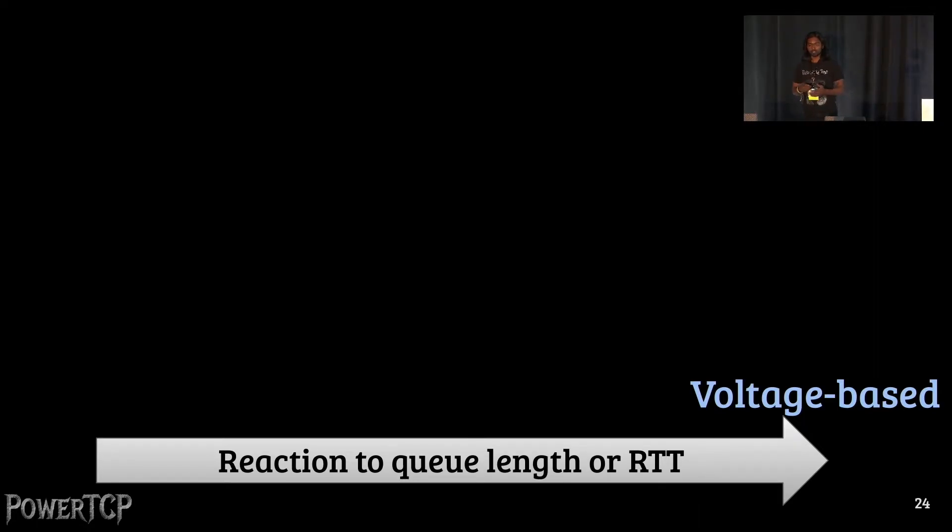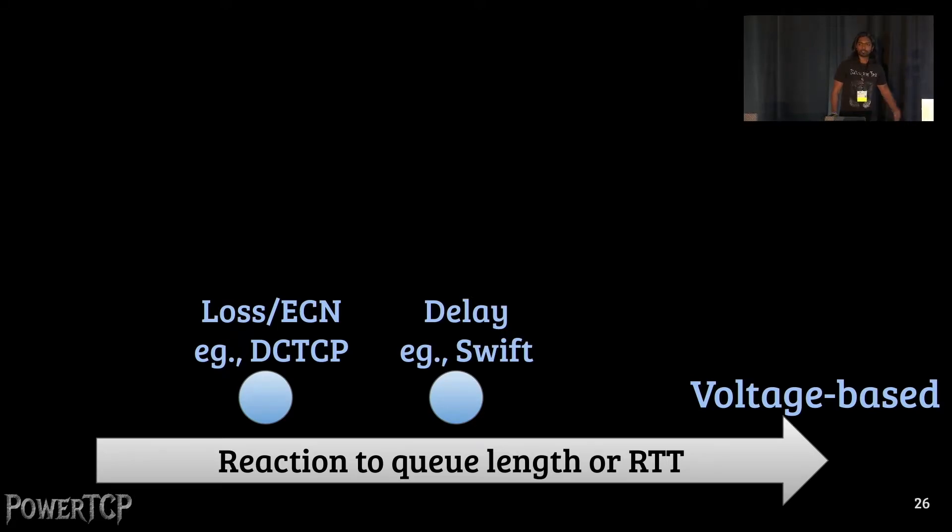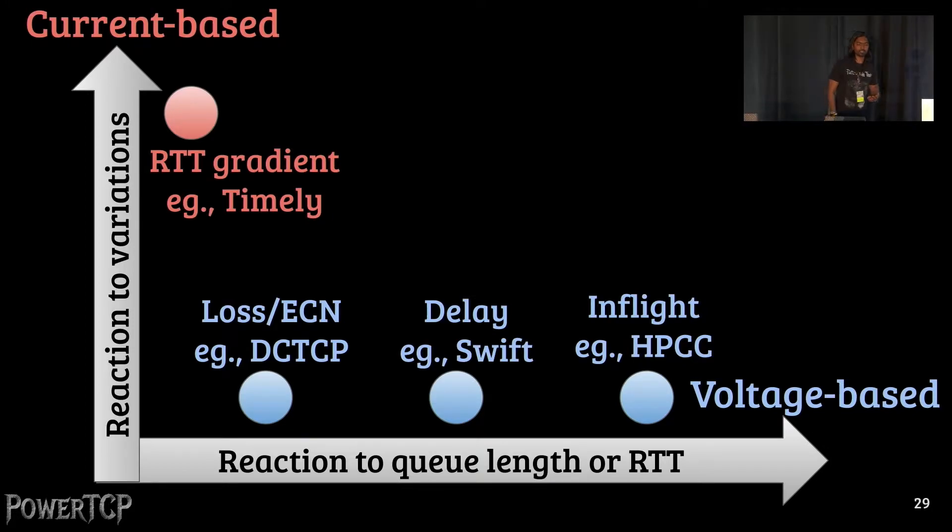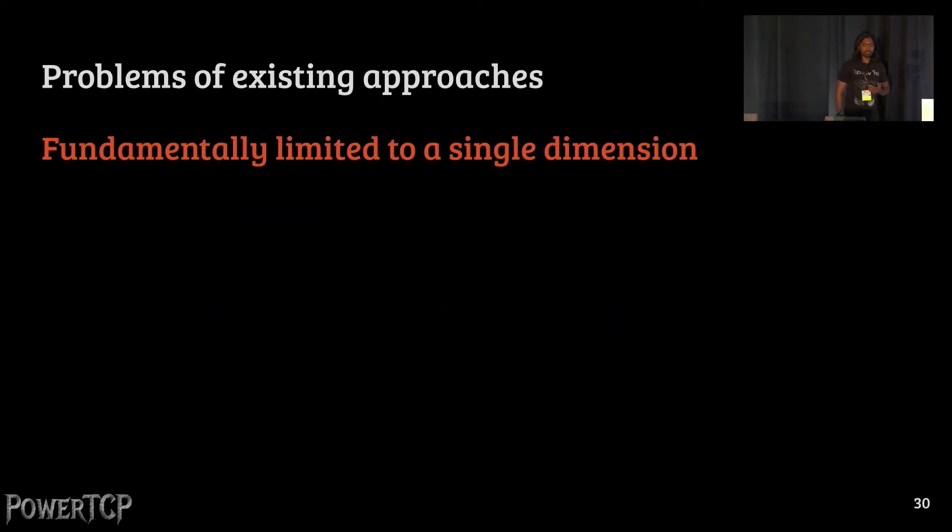To better visualize this classification, on one dimension, we show the voltage-based class of algorithms that are reacting to queue length or the round-trip times. For instance, loss or ECN-based like DCTCP, delay-based algorithms like Swift, in-flight-based algorithms like HPCC. On the other dimension, we have the current-based algorithms that are reacting to the variations in the queue length or the round-trip times. For instance, the RTT gradient-based approach like timely. Our key observation in this work is that existing approaches that are classified as current and voltage-based are fundamentally limited to a single dimension.